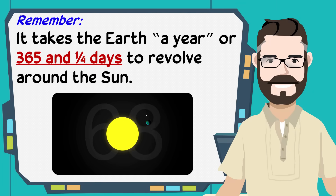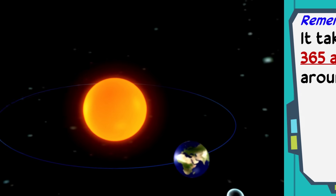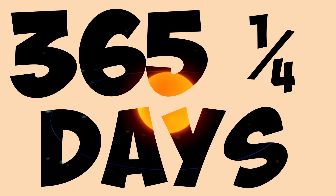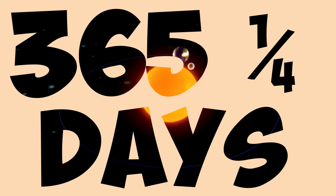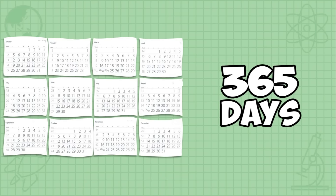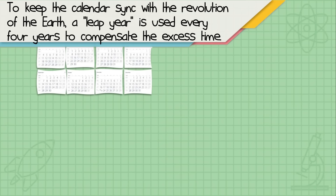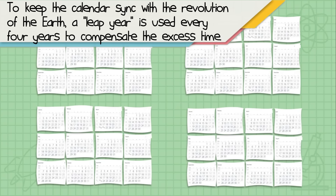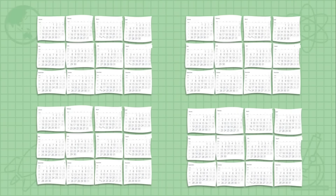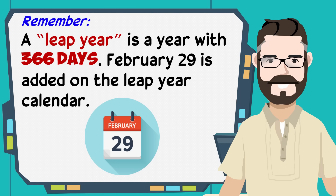It takes the Earth a year, or 365 and one-fourth days, to revolve around the Sun. The Gregorian calendar we use only has 365 days, so to keep the calendar in sync with the Earth's revolution, a leap year is used every four years to compensate for the excess time. A leap year is a year with 366 days — February 29 is added to the calendar as an intercalary day.